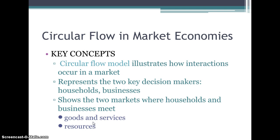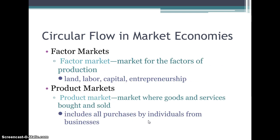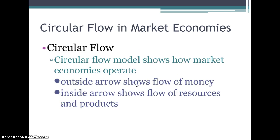The circular flow model illustrates how interactions occur in a market. It represents the two key decision makers — households and businesses — and shows how the two markets where they meet work. There are factor markets, which deal with the factors of production: land, labor, capital, and entrepreneurship. Product markets are markets where goods and services are bought and sold, like grocery stores, the mall, and online. In the circular flow model, the outside arrow shows the flow of money, and the inside arrow shows the flow of resources and products.